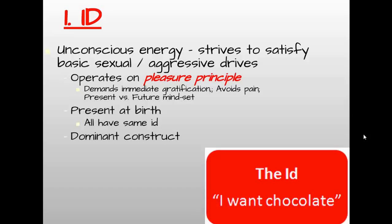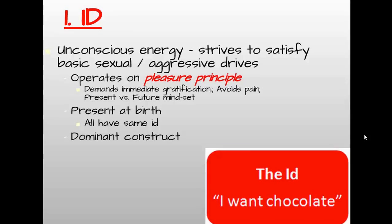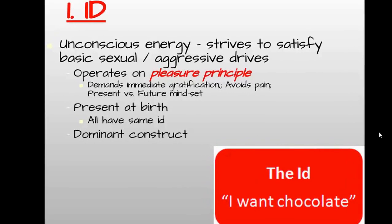The id winds up being our dominant construct. Think about the things that you want — we are a very immediate gratification kind of society today. We've got fast food; I want it and I want it now. It dominates us if we don't keep it in check. The id is very childish, very selfish, and very controlling if we allow it to be.